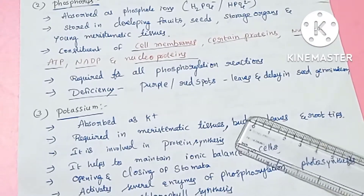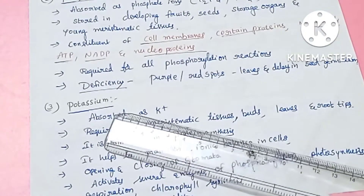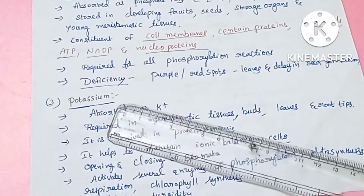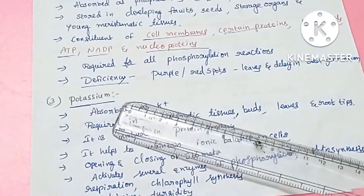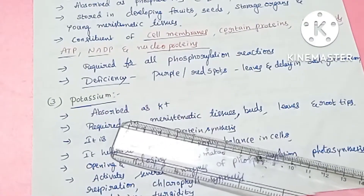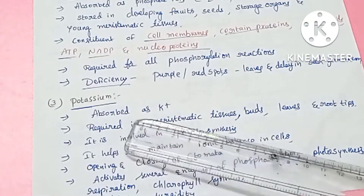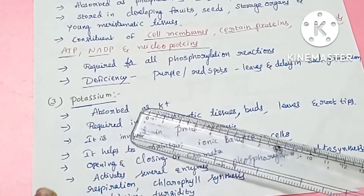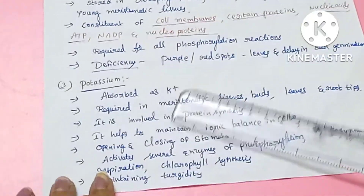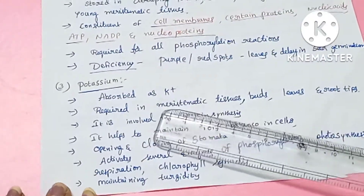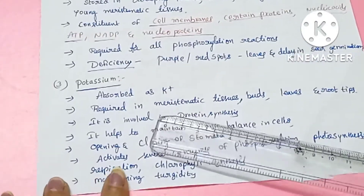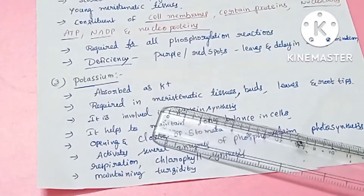The next element is potassium. Potassium is absorbed in the form of potassium ions. How is it used in plants?